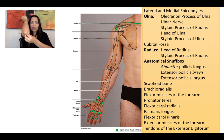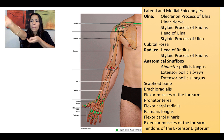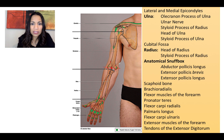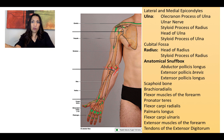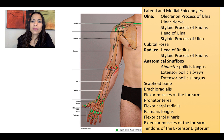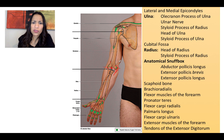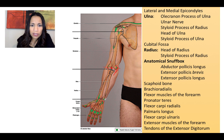On the ulna, we can feel the olecranon at your elbow. Passing very superficially near the medial epicondyle, we're going to find the ulnar nerve. Remember that when you bump or hit this part of your elbow, you can feel that electrical current — that pain going through the medial side of your forearm all the way to your hand.